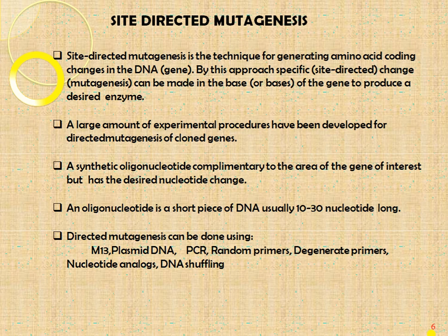A large number of experimental procedures have been developed for directed mutagenesis of cloned genes. A synthetic oligonucleotide complementary to the area of the gene of interest has a desired nucleotide change; an oligonucleotide is a short piece of DNA usually 10 to 30 nucleotides long. Directed mutagenesis can be done using M13 plasmid DNA, PCR, random primers, degenerate primers, nucleotide analogs, and DNA shuffling.